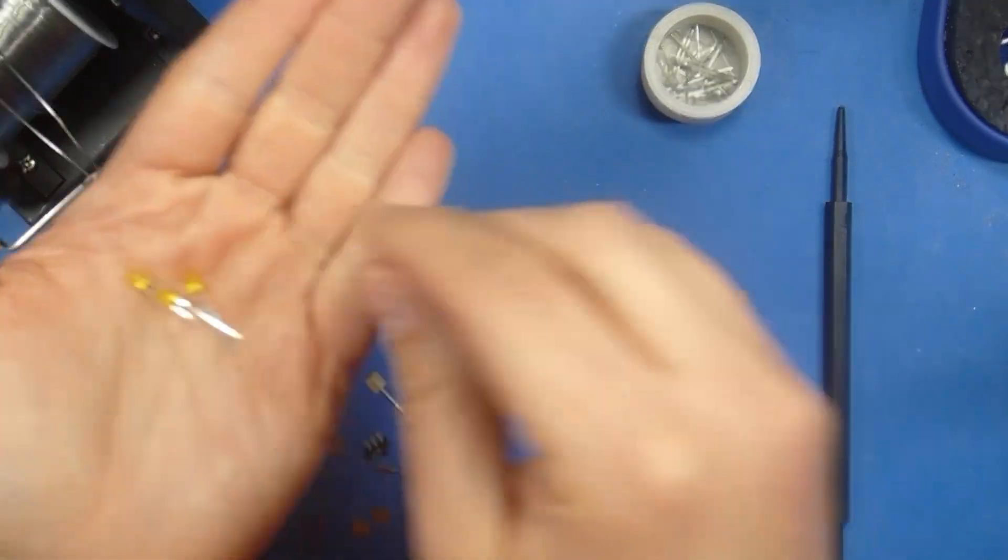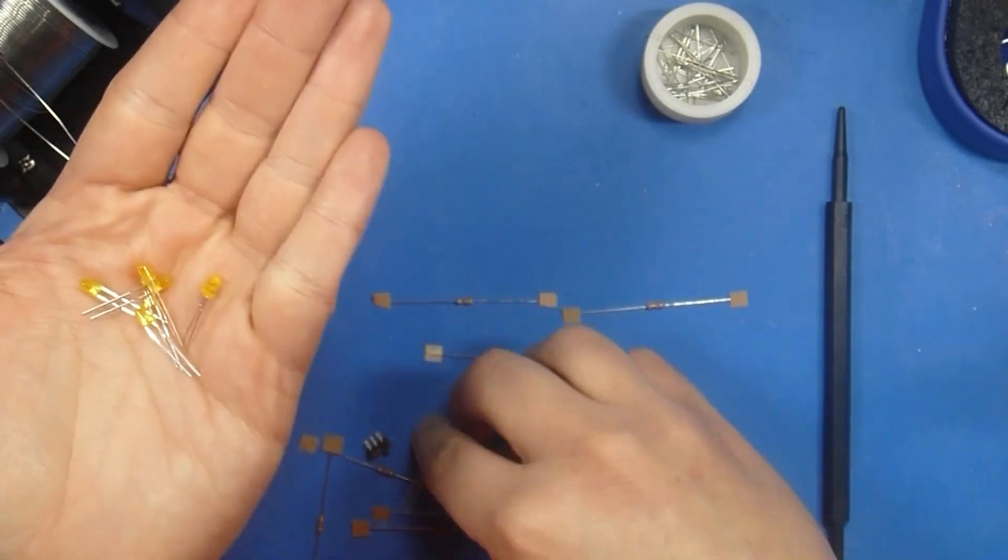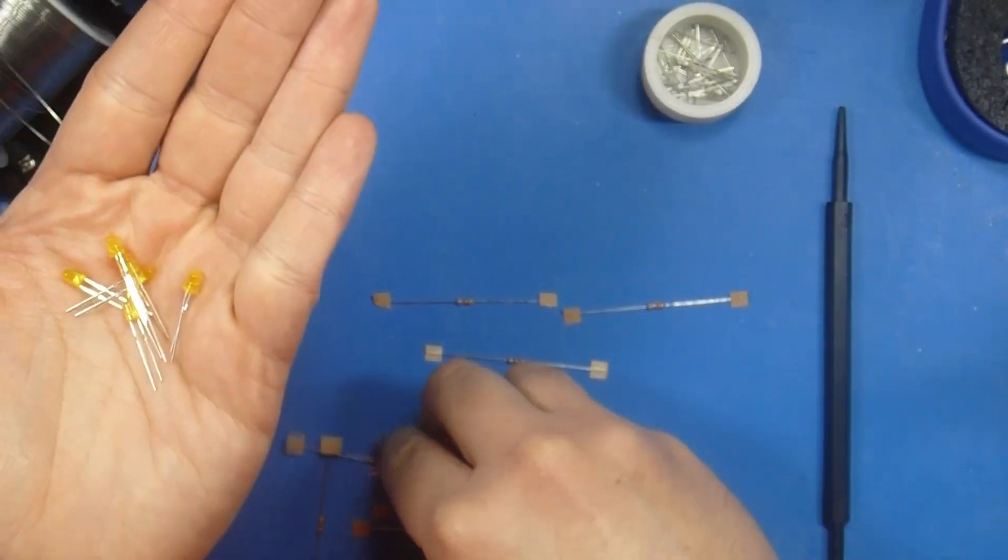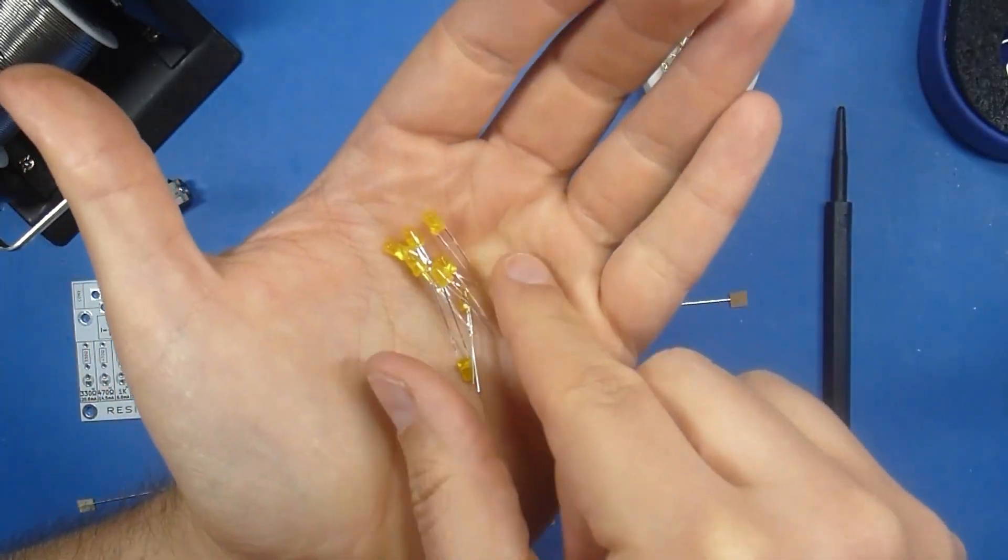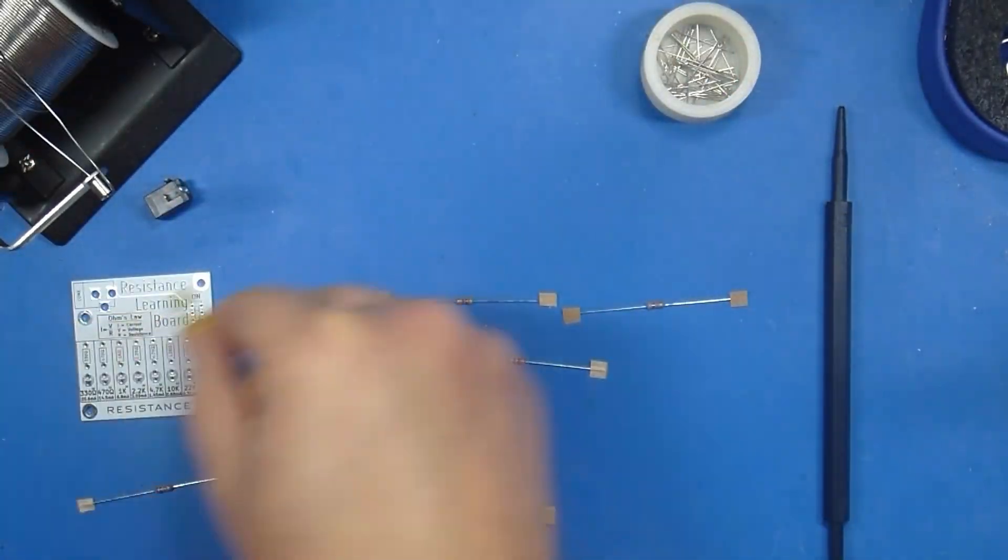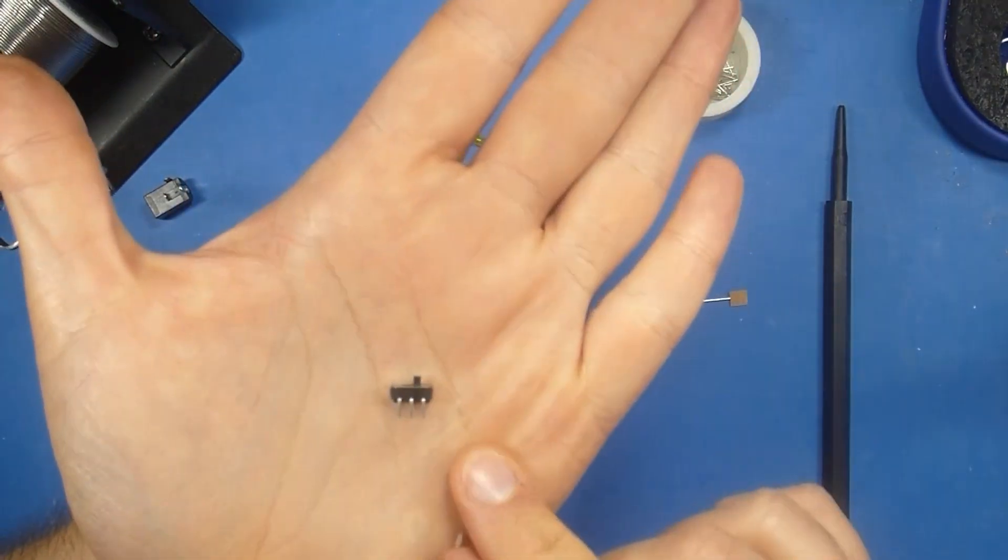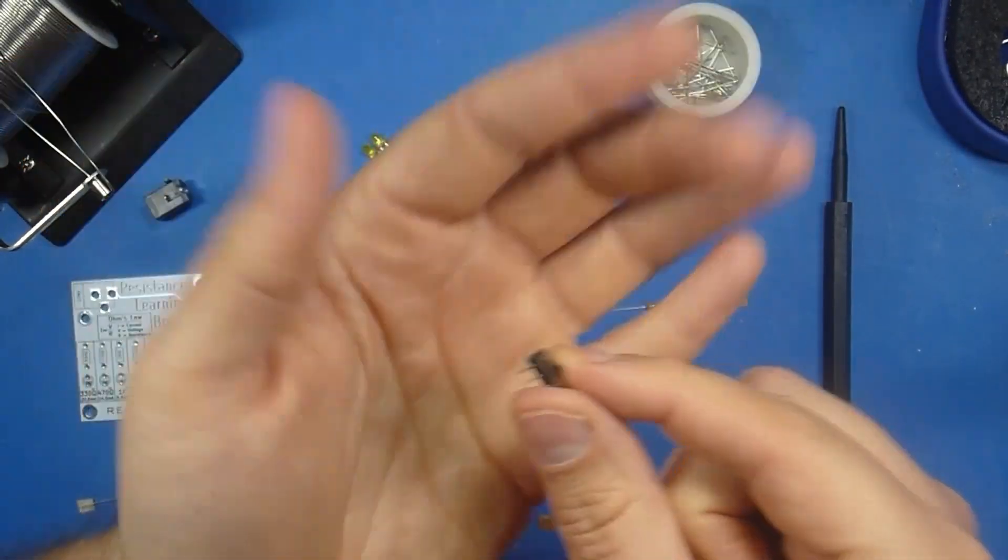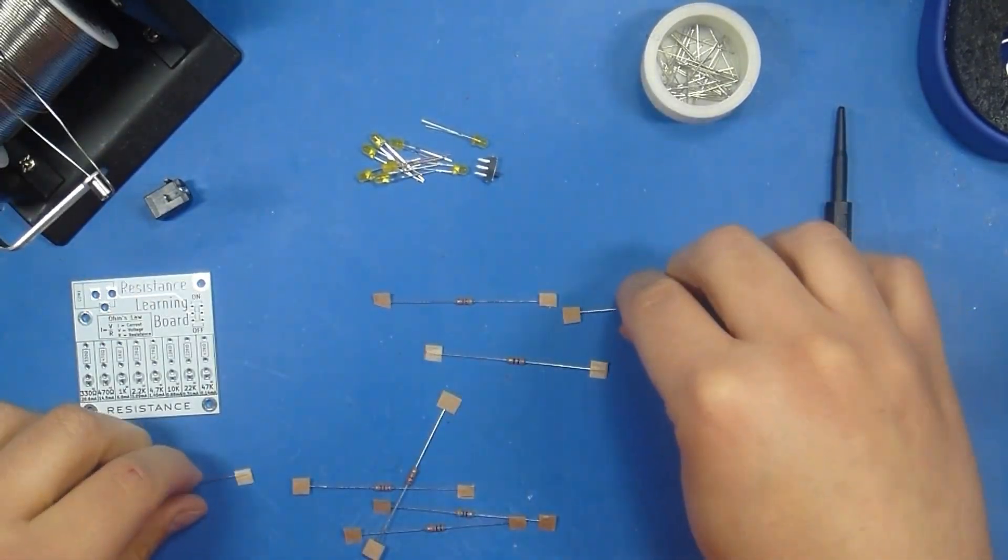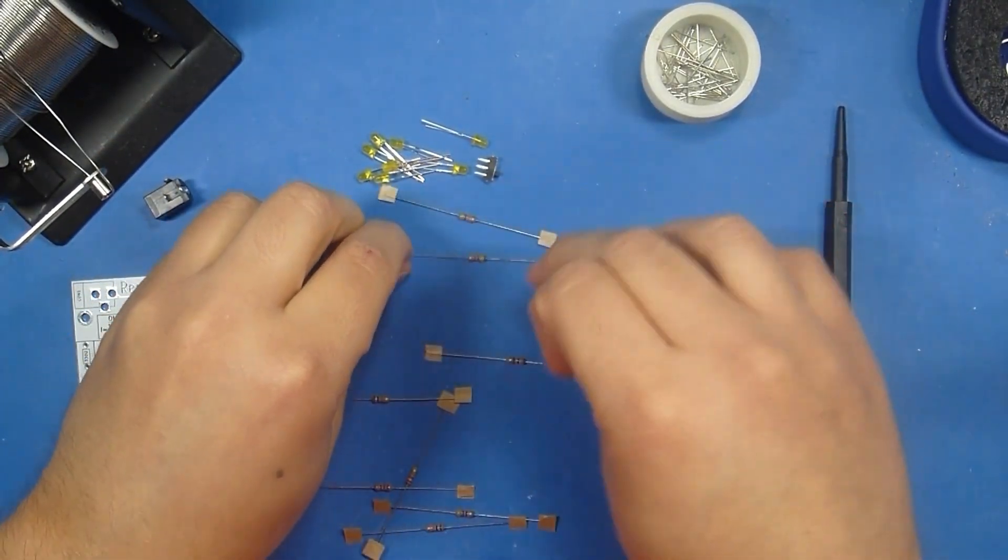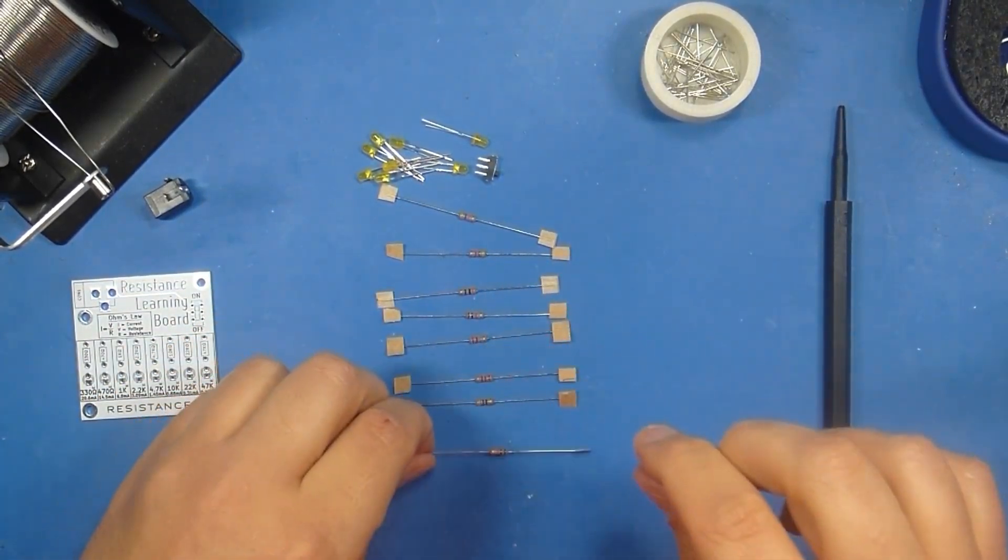Then you're going to have 8 3mm LEDs. I like to collect them all together so that they're easy to find. Put them into a little pile, and we'll set those right into our workspace. You're going to have a double-pole, double-throw switch, which is my favorite component in all of electronics. And then you'll have a bunch of resistors. You should have 8 in total.